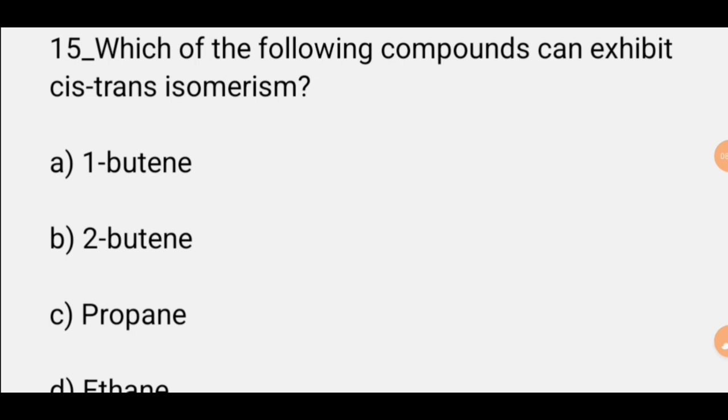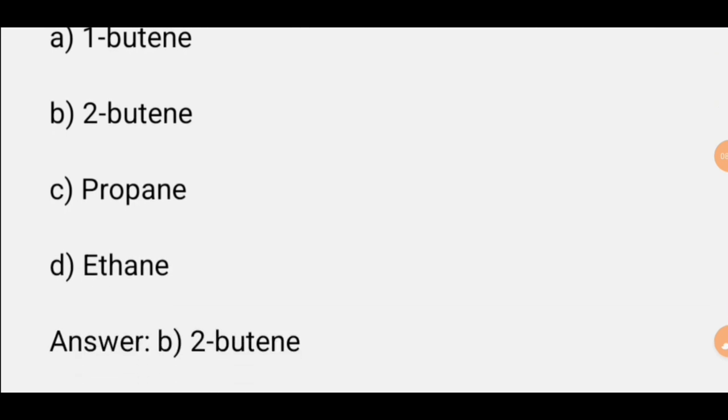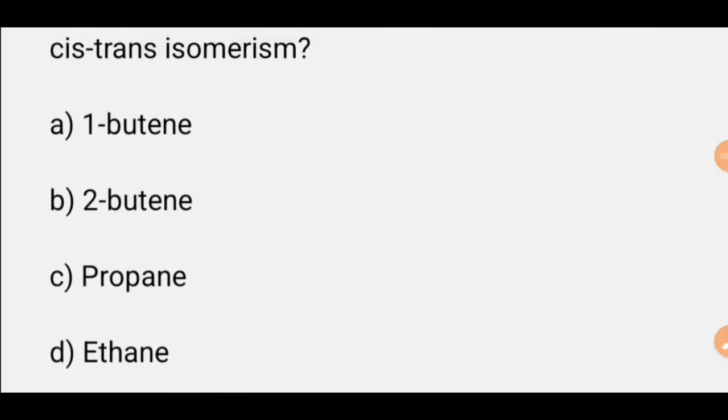MCQ number fifteen: Which compound exhibits cis-trans isomerism? The correct option is 2-butene.